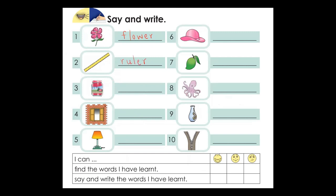Look at number 3. What about number 4? It's a window. What about number 5? It's a lamp. What about number 6? It's a hat. Number 7 — it's a mango. Number 8 — it's an octopus. Number 9 — it's a vase. Number 10 — it's a zip.